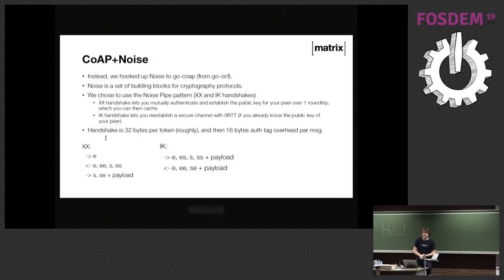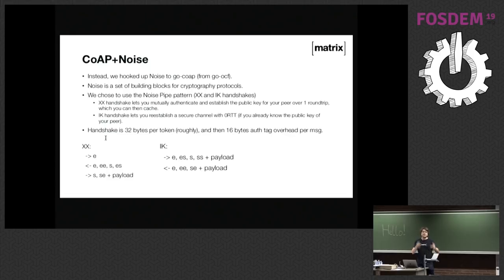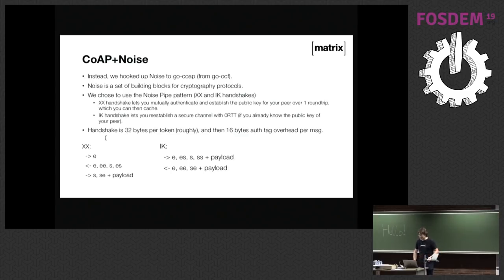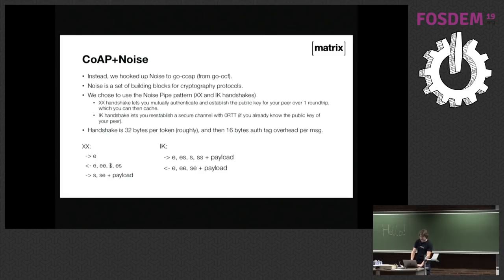So we decided to look at the Noise Protocol instead. Noise is written by Trevor Perrin — one of the people behind the Double Ratchet that Signal uses for encryption. Noise is almost a meta-protocol: building blocks for creating protocols. It gives you about 11 or 12 different handshakes for the lightest-weight, most targeted encryption imaginable. The two most-used handshakes are called XX and IK. XX is a three-step handshake where you send an ephemeral key, get back another ephemeral key, and perform elliptic-curve Diffie-Hellman, where each token is 32 bytes long.